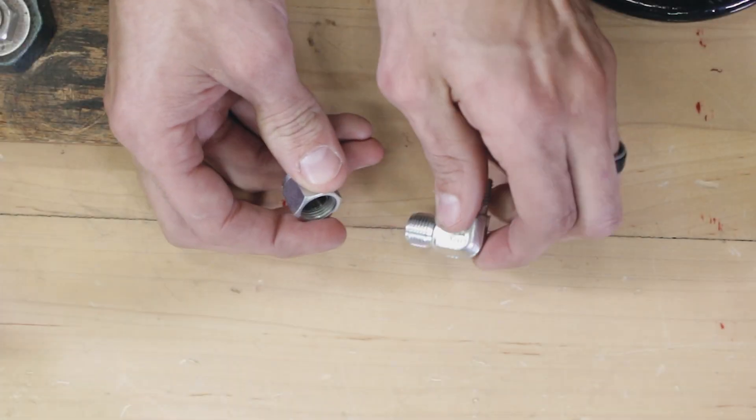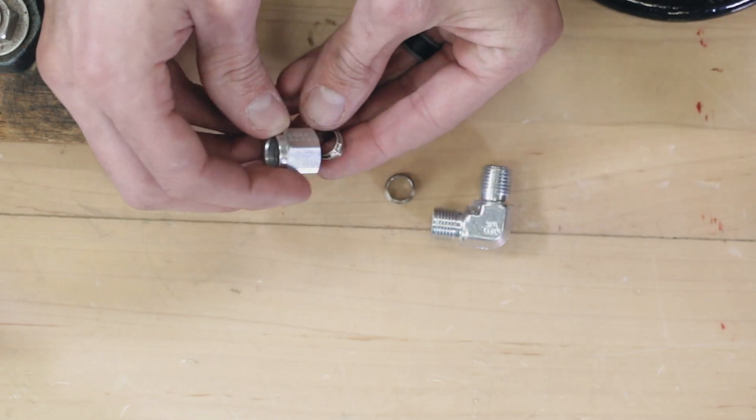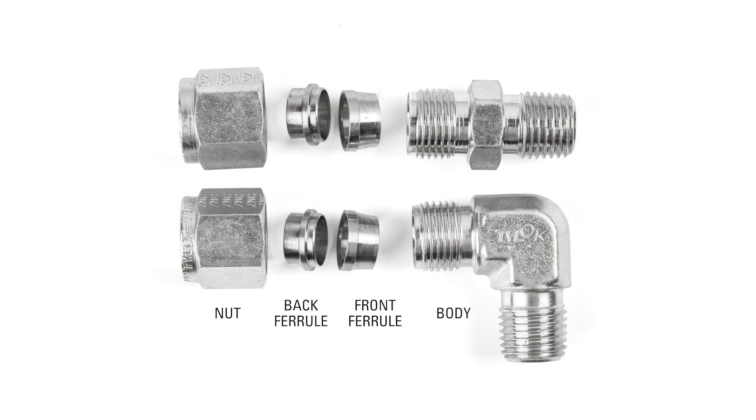We'll start by looking at a fitting, which includes four parts: the body, nut, front ferrule, and back ferrule. Generally, you don't want to take these apart ahead of time to avoid possibly getting any dirt or debris inside. If it accidentally comes apart, it's good to know how the parts go back together.